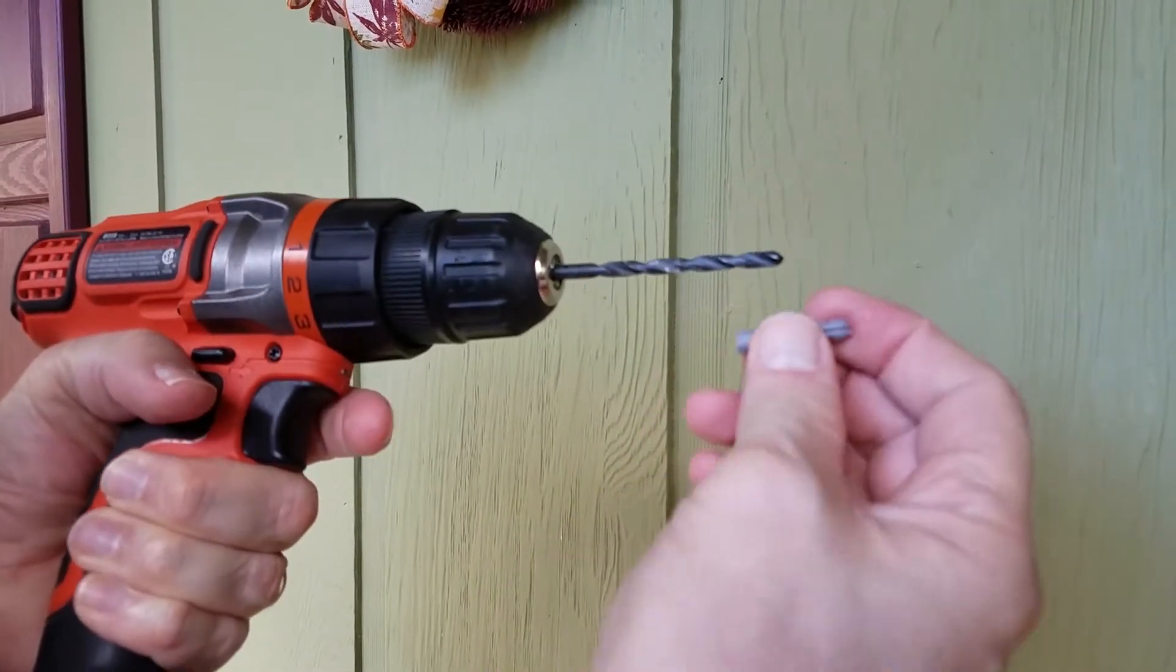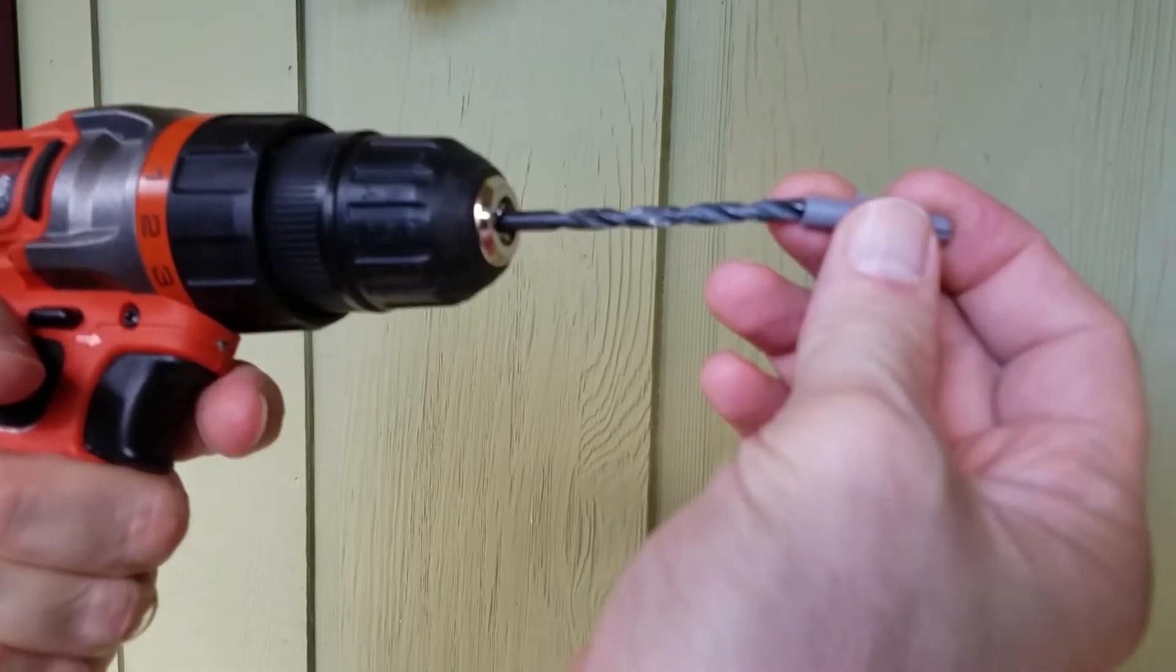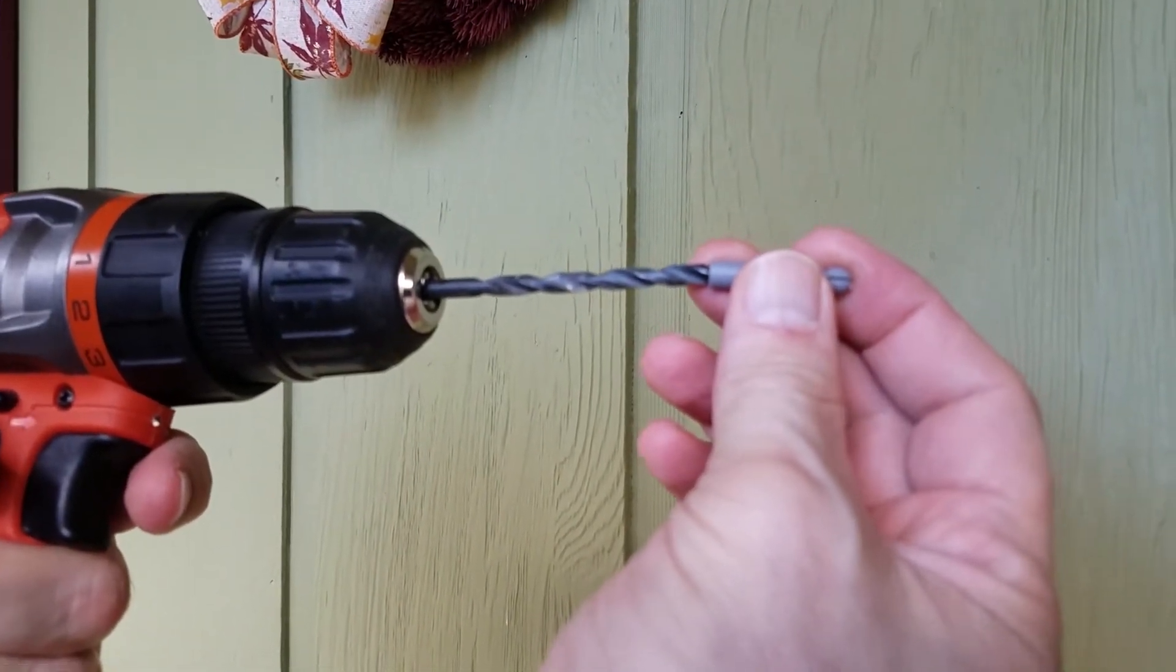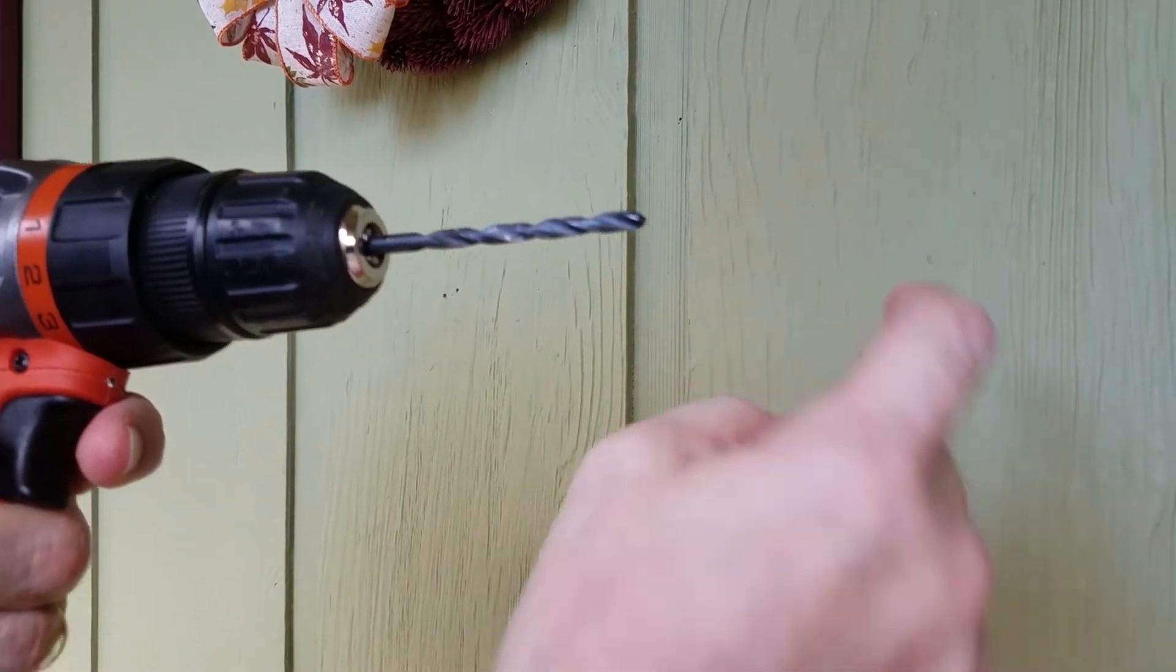I'm using a 3/16 bit because obviously I don't want to make too big of a hole. I'm going to try to come in just slightly under and hopefully I can push that into this material. So here we go.